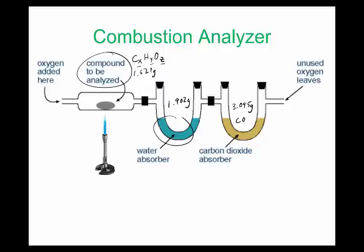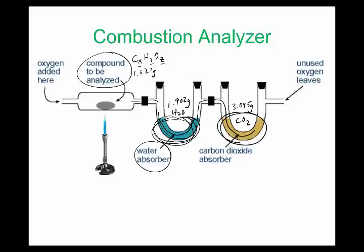In the combustion analyzer, gas flows through the system. A substance traps the water vapor released on the product side — water binds to the first absorber. The CO₂, being mostly nonpolar, passes through that absorber and gets trapped in a second one. You then weigh each absorber to determine how much of each product formed.